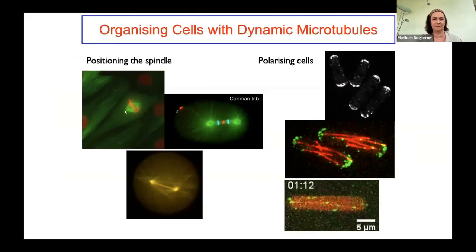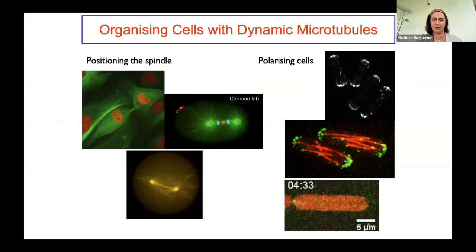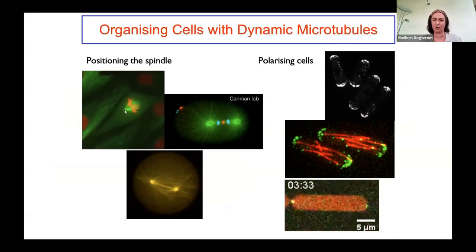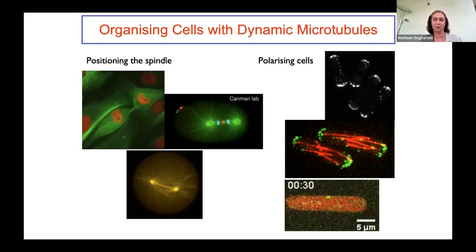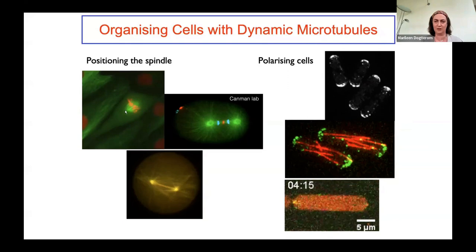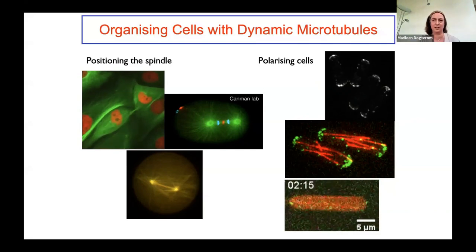These same droplets, which naturally form spherical three-dimensional structures, can also be forced into microfluidic devices that impose a certain shape. At the bottom you see an elongated droplet, roughly the size and shape of a fission yeast cell, forced into shape in a microfluidic device. We can then study how end-binding proteins can be delivered specifically to the ends of such structures by dynamic microtubules, as observed in polarizing fission yeast cells.